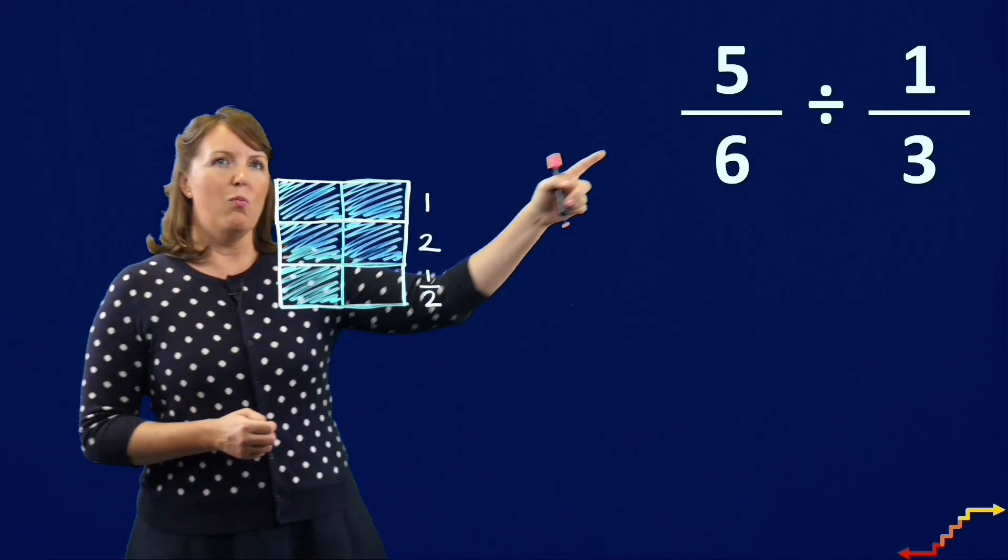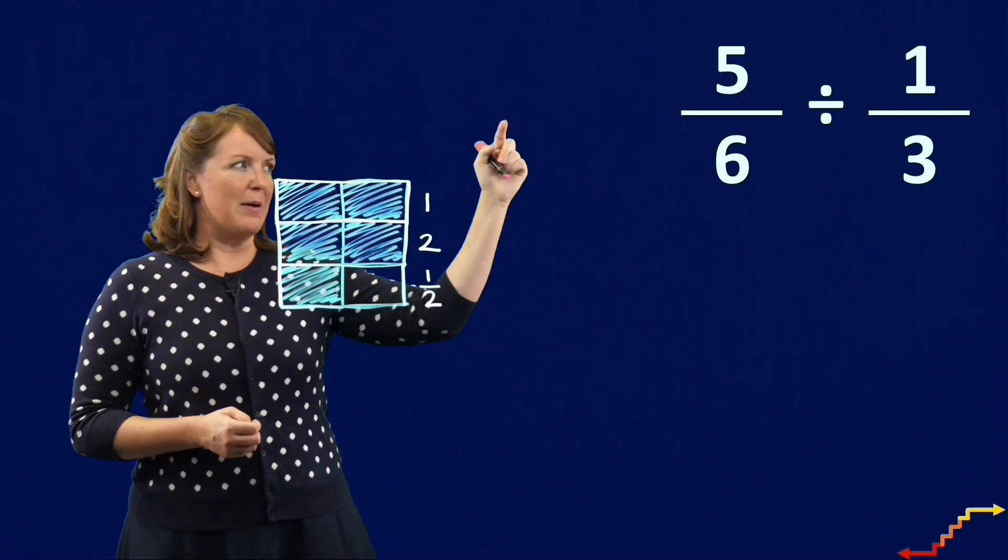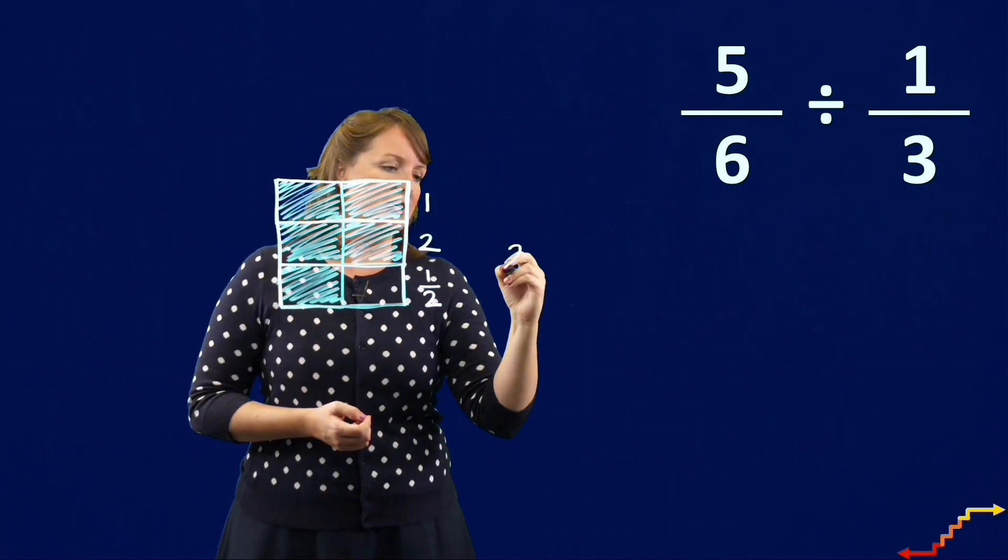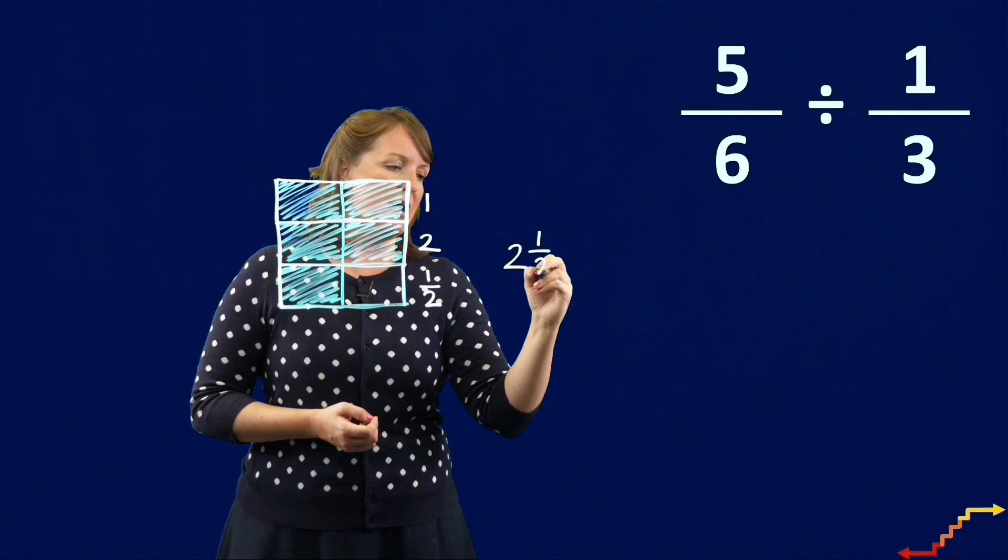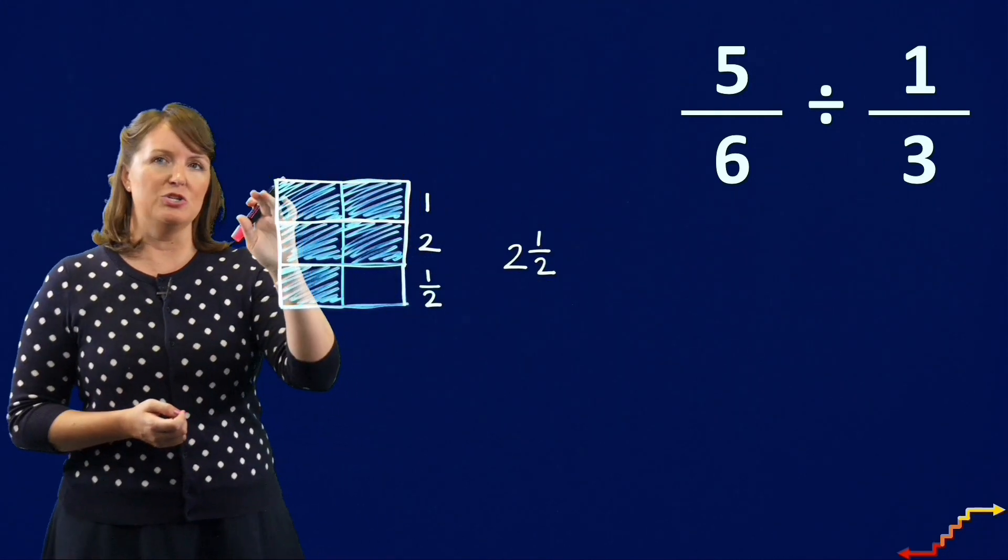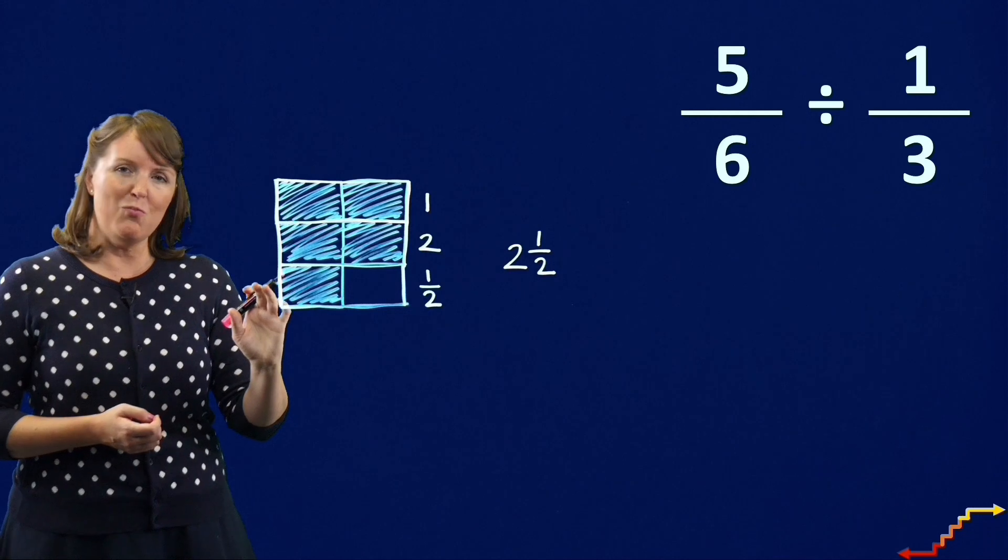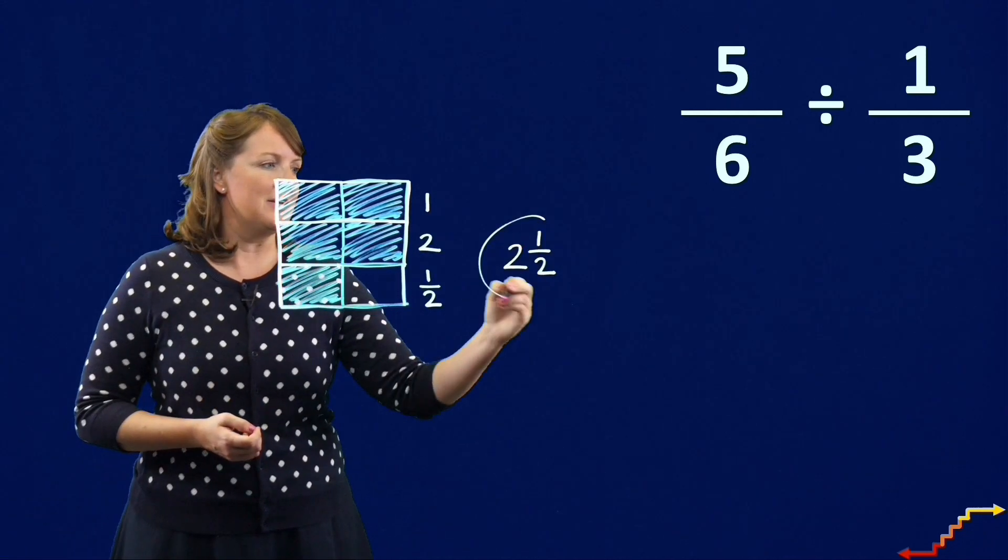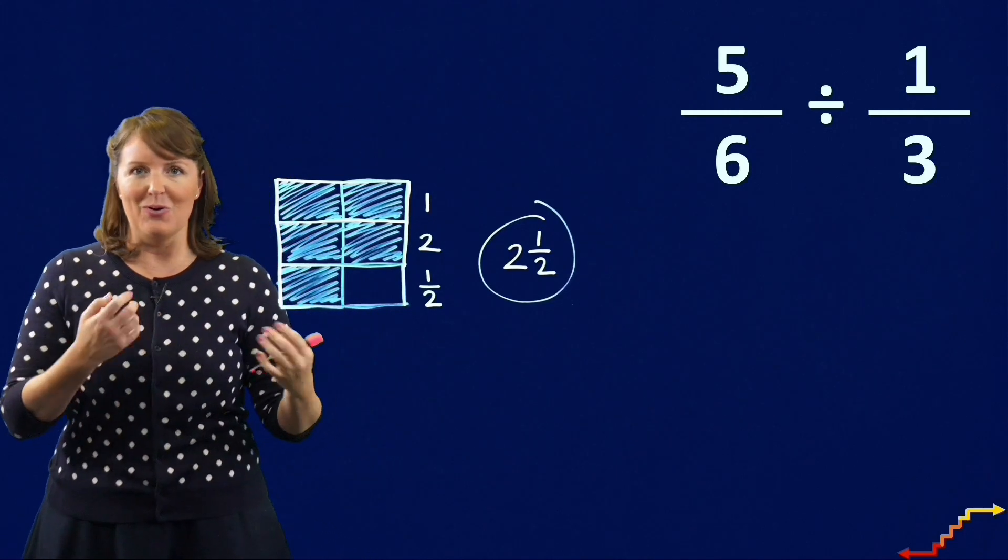So when I find one-third, how many groups of one-third can I make with five-sixths? My quotient is two and one-half. I can make two full groups of one-third and then one-half of the next group. So this is my answer or my quotient.